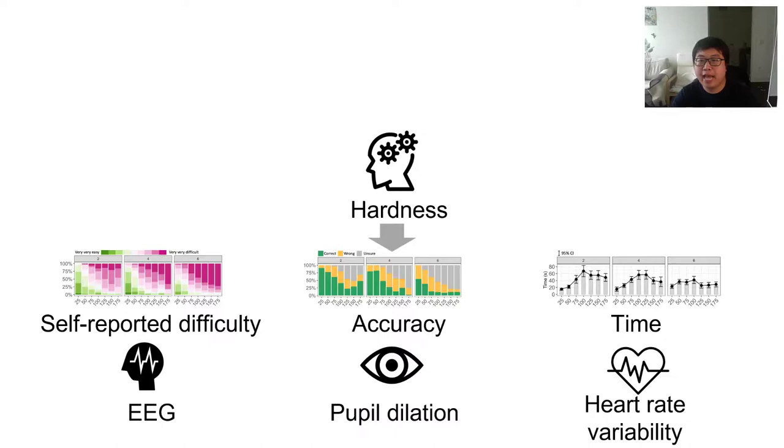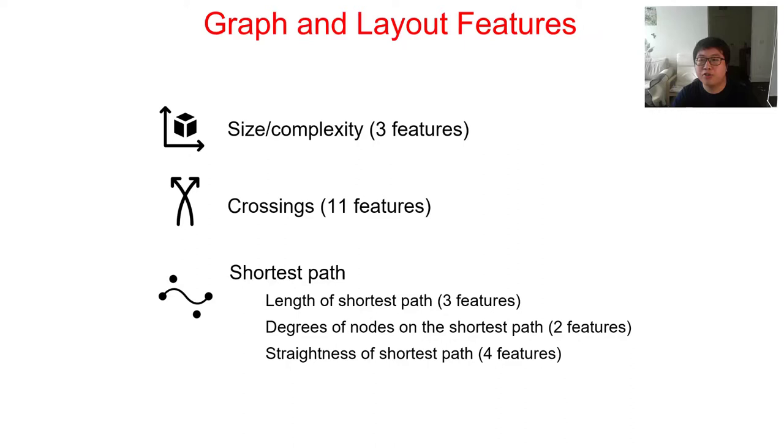We first look at how to extract the hardness from traditional measures. We also look at how the physiological measures affected by the hardness. But it is unclear what affects the hardness. In the experiment, we explicitly controlled the number of nodes and the density, because these are the two measures widely used in the literature in graph visualization user studies. However, we would like to investigate the other graph and layout features in the data sets we generated.